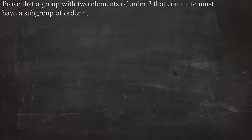Prove that a group with two elements of order 2 that commute must have a subgroup of order 4. Let's assume that these two elements are a and b, where b is in g, and a squared equals b squared equals e.